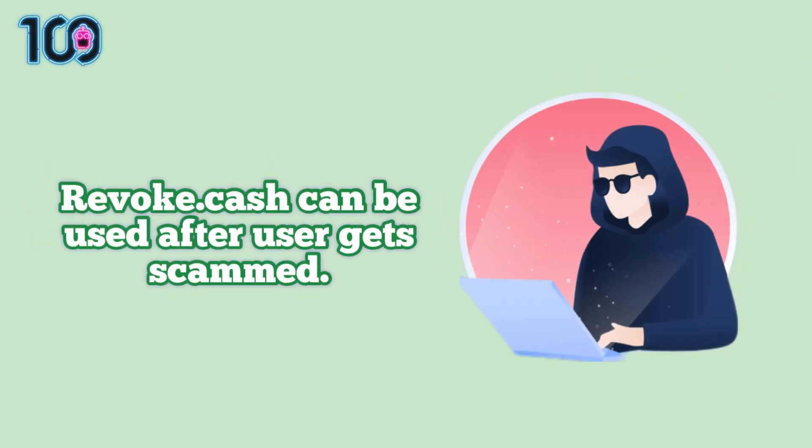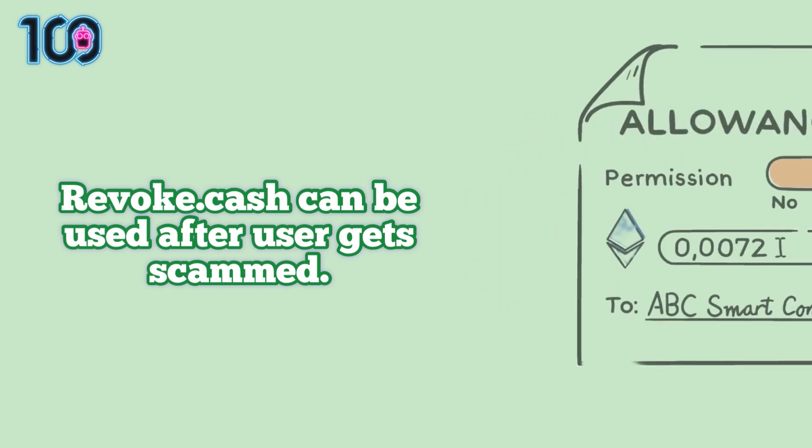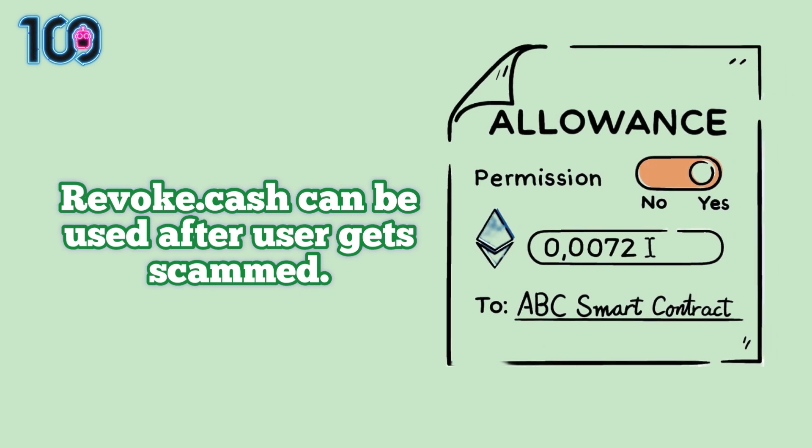Revoke Cash can also be used after a user gets scammed. Very often, scammers try to trick you into granting them an allowance to your funds. Sort your allowances by most recent to find out which allowances are to blame and revoke them to prevent further damage.